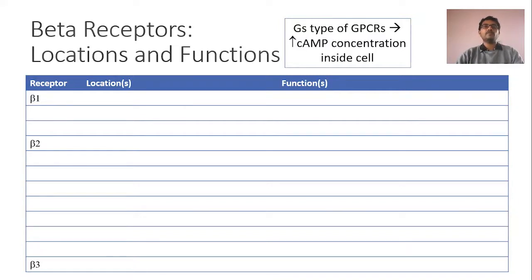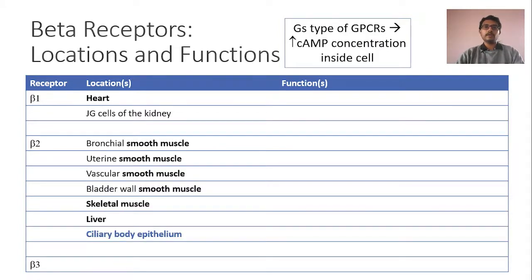There are three major types of beta-receptors: beta-1, beta-2, and beta-3. Beta-1 receptors are located in two important locations: one is the heart, and another is the JG cells of the kidney. Beta-2 receptors are located in various smooth muscles and skeletal muscles — bronchial smooth muscle, uterine smooth muscle, vascular smooth muscle, and bladder wall smooth muscle — as well as skeletal muscles, liver, and ciliary body epithelium. Beta-3 receptors are located just in the adipocytes.